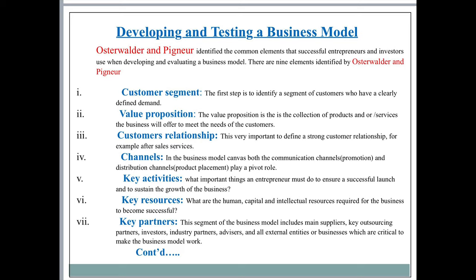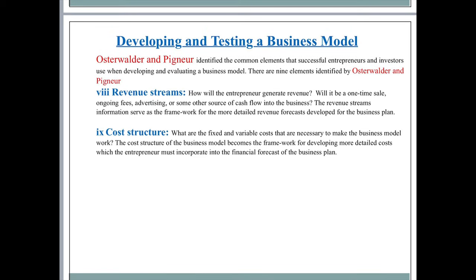When we say intellectual resources, we mean copyrights, patents, trademarks, and trade dress — all these things are also important. Key partners: this segment of the business model includes main suppliers, key outsourcing partners, investors, industry suppliers, advisors, and all external entities or businesses which are critical to making the business model work.